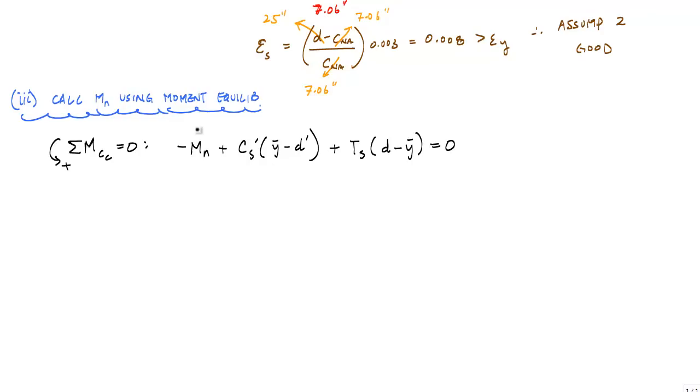So if I solve for MN, I know from the equivalent stress block that Y bar, because it's a rectangular stress block, is just equal to A over 2. The centroid of the compression force resultant is at A over 2.